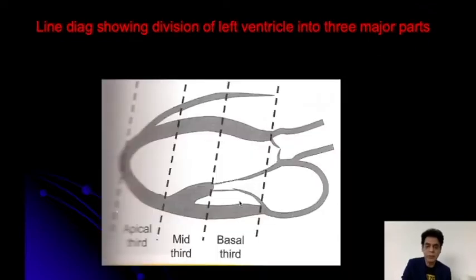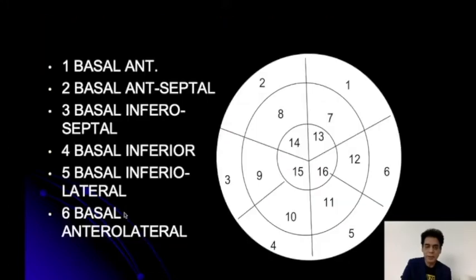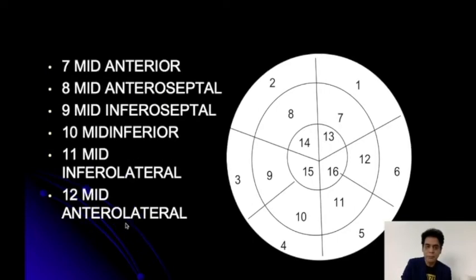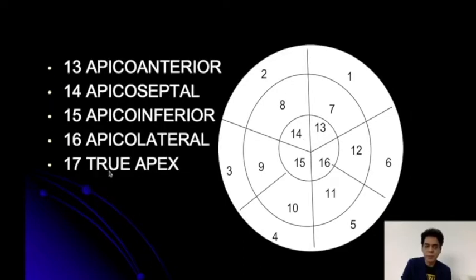So let us go on to that: basal third, mid third, and apical third. Basal anterior and basal anteroseptal — same thing which I have already told you. Then the mid one, and then in the apical area we have apico-anterior, apico-septal which is segment number 14, apico-inferior, apico-lateral.